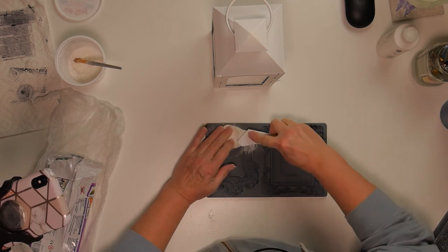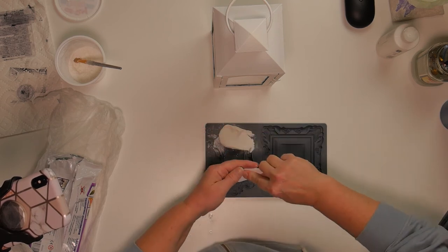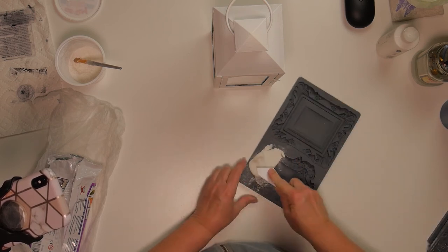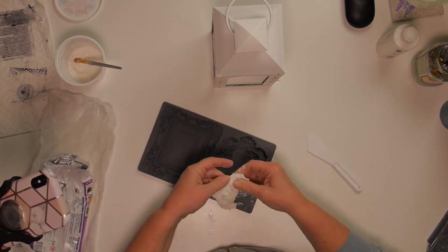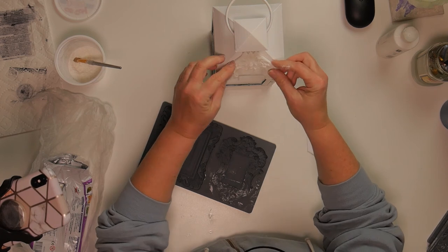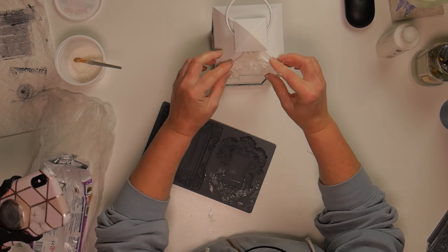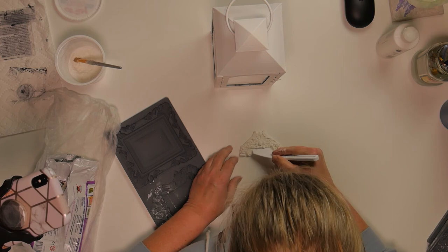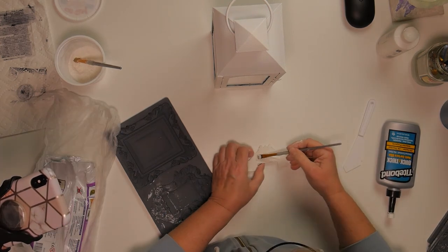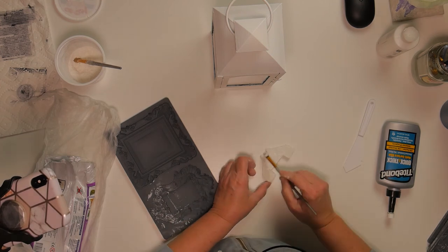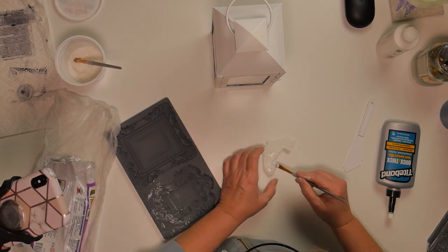So here I am using the IOD Mold Frames 2, and I just want to use the top portion of the mold. As you can see, I'm going to put on the top of, there's four parts or four sides, I guess you would say, to the top. So I'm just going to use the Titebond on this and glue it on top.